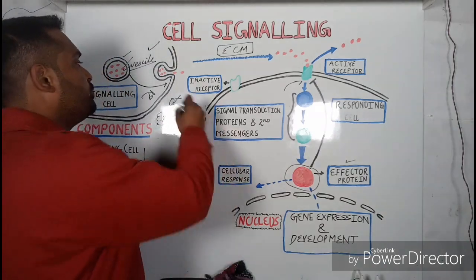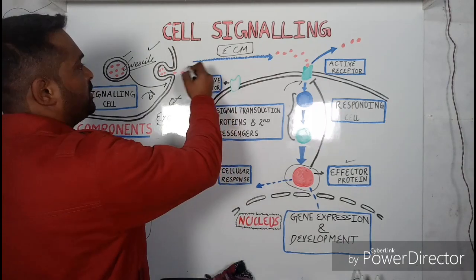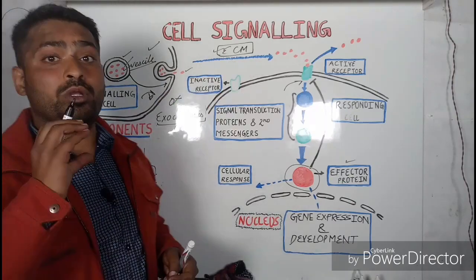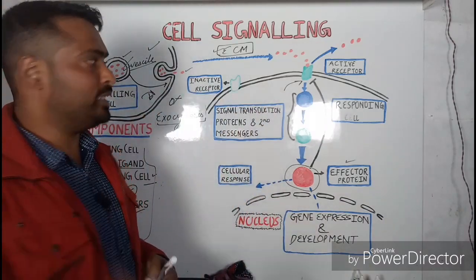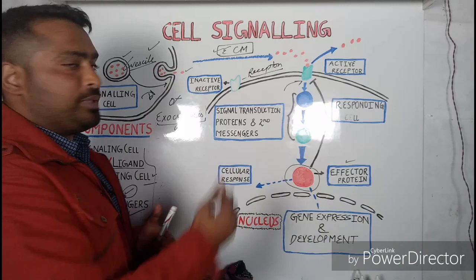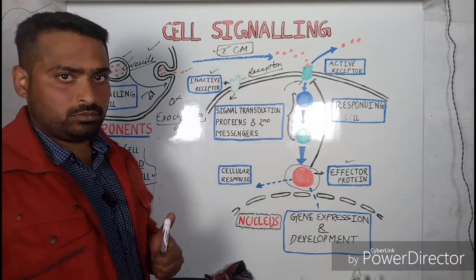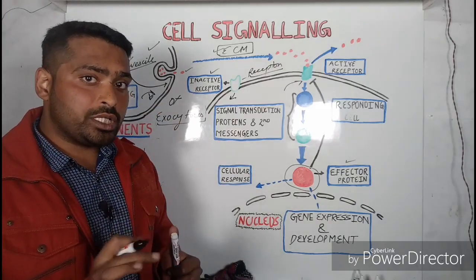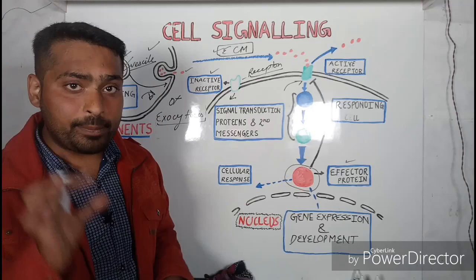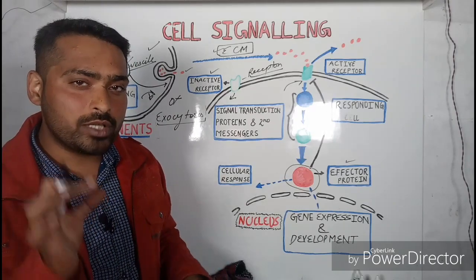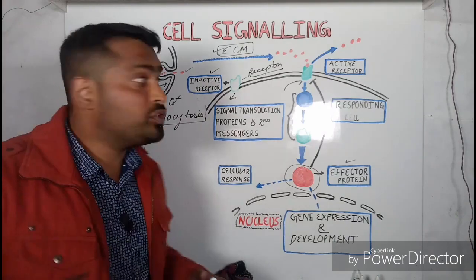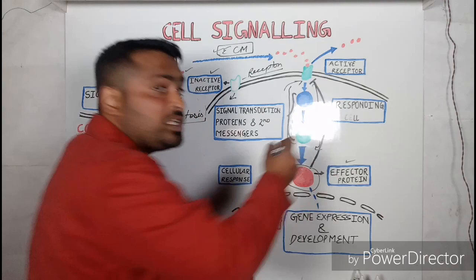With the help of exocytosis, the signal of interest is moved out. The molecule is now present in the ECM and starts searching for the complementary sequence present on the receptor — shown here in green. Before it attaches, the receptor is in inactive form. After binding to the receptor, the receptor becomes active. The activation of the receptor results in a conformational change of the receptor protein.